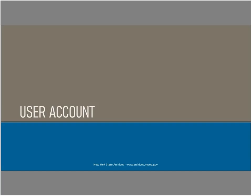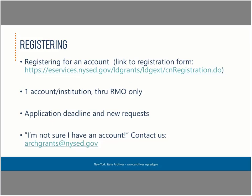Before we explore the system itself, we will discuss how to get access to eGrants — specifically, getting and managing a user account. A user account is needed to access the eGrants system. The account is set up through the NewYork.gov ID / New York State Directory Services system. Only one account is allowed per institution, and that account is set up only through the institution's Records Management Officer, or RMO.